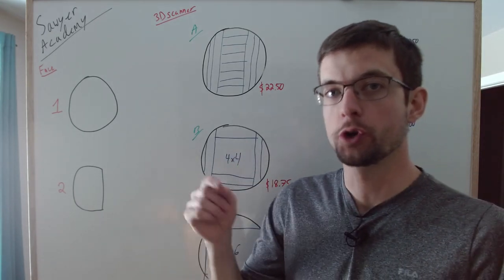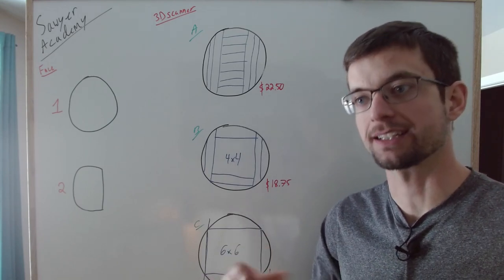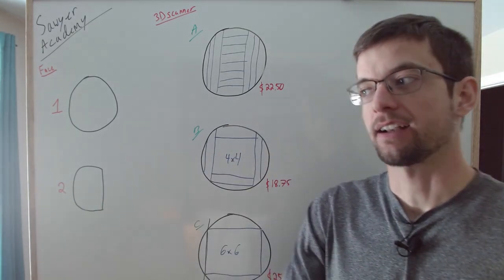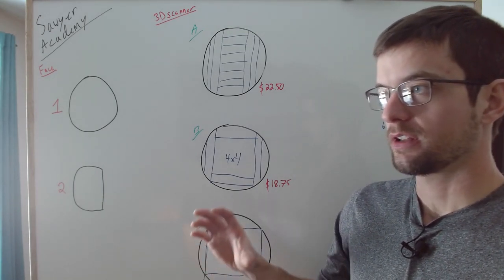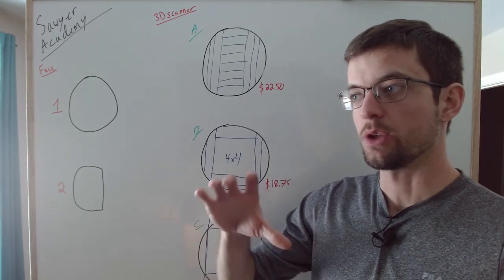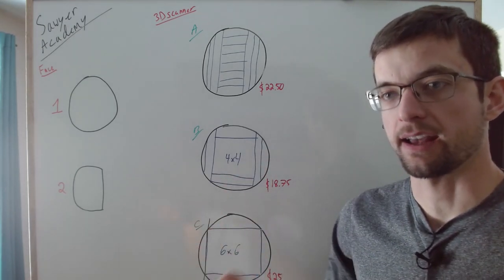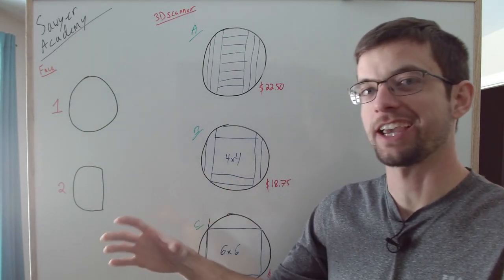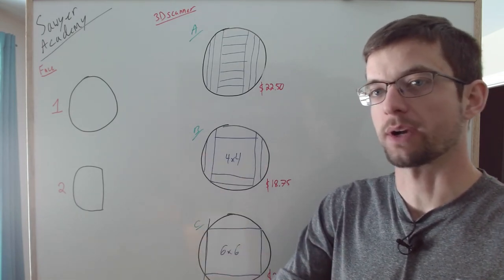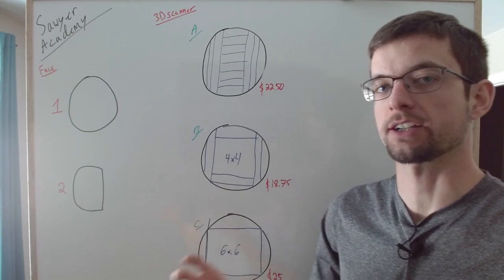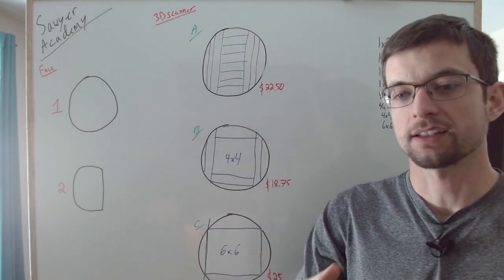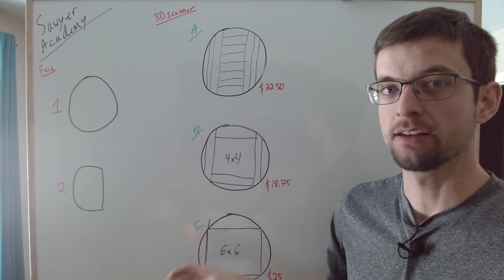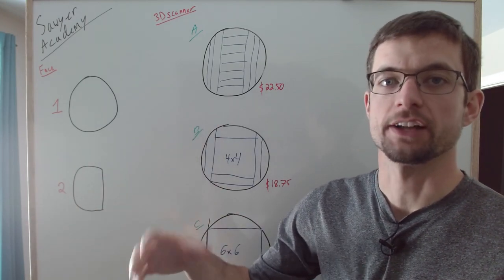Depending on your setup, you could scan again on phase three using the same scanner or a second scanner. Once the log is turned into a cant, you have a much clearer picture of what you can get out of it — whereas on phase one with a full log, you're making a very good educated guess. So depending on your setup, you either scan once on phase one and don't touch the log again, or scan again on phase three when you're at cant size. You won't scan on phase two.